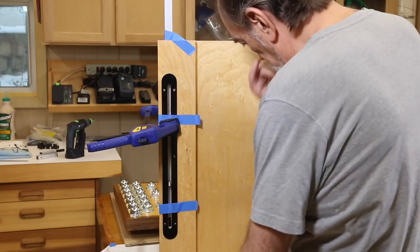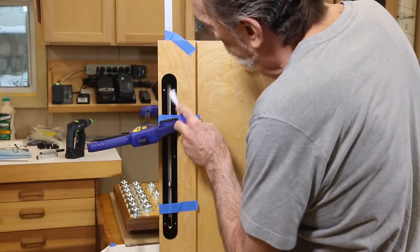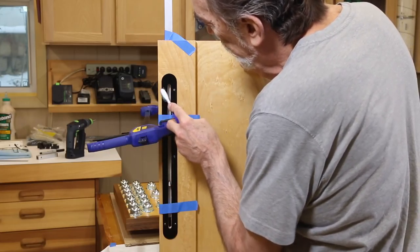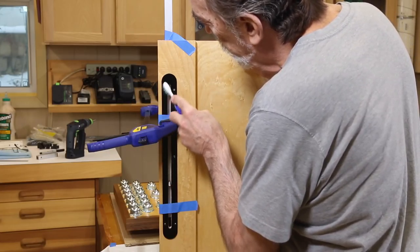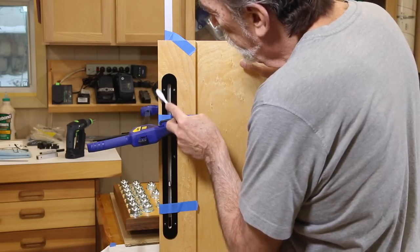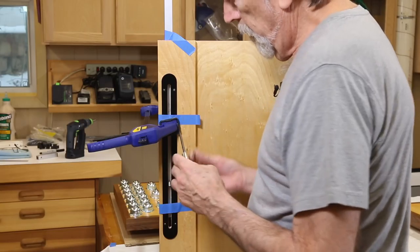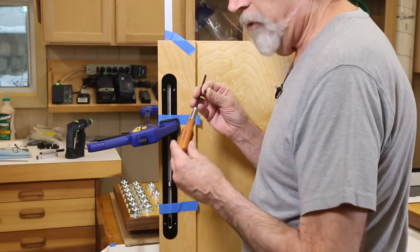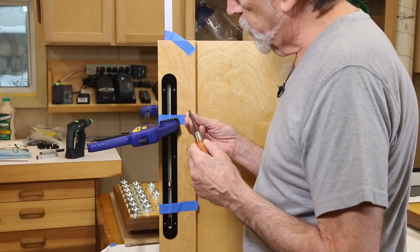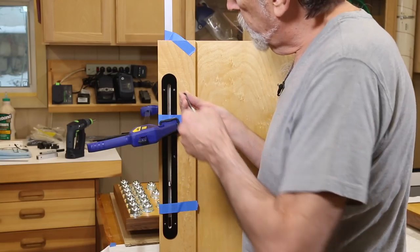Once you get it started, use this little handle here on the end and just turn it in. It'll eject chips almost like a drill bit and it'll kind of thread that wood a little bit. Then back that out.